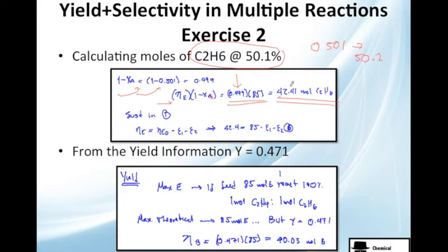Because 85 are the moles that we are feeding. And 0.499 is the moles that we didn't react. So, we get this. We're going to substitute this, because it's the final amount of moles of E. We substitute this here. And we got 42.4 equals Ne0, or the initial amount of moles. It's here, 85. Remember, it's only 100 times 0.85. This is what we feed. This is what we're left at the end.